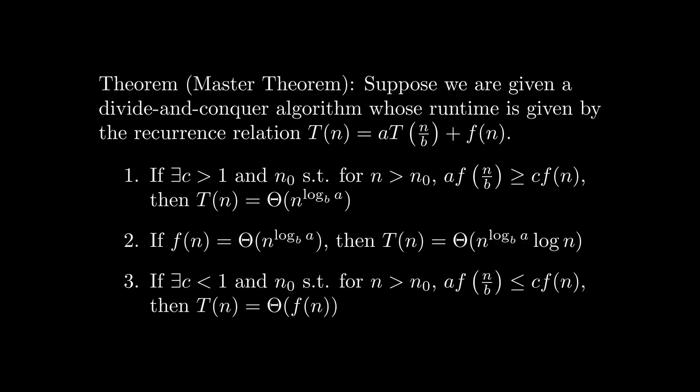For any algorithm whose runtime satisfies this recurrence relation, we can use the master theorem to compute the runtime complexity. The master theorem states that there are three different cases. Firstly, if there exists C > 1 and n-naught such that for n > n-naught, A·F(n/B) ≥ C·F(n), then T(n) = Θ(n^(log_B A)). Secondly, if F(n) = Θ(n^(log_B A)), then T(n) = Θ(n^(log_B A) · log n). Lastly, if there exists C < 1 and n-naught such that A·F(n/B) ≤ C·F(n), then T(n) = Θ(F(n)).